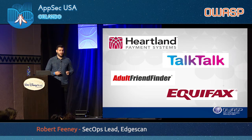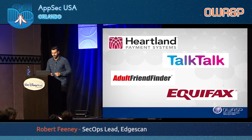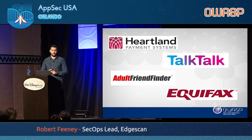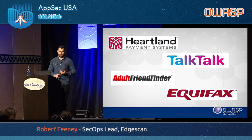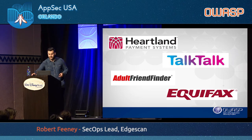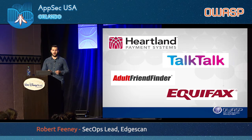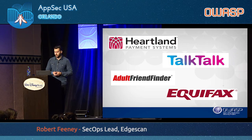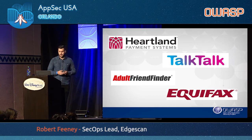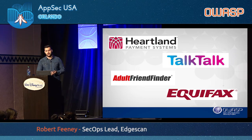Adult Friend Finder was the victim of 340 million accounts being stolen — some including US government and military email addresses — as a result of a local file inclusion vulnerability. More recently, as most of you are aware, Equifax was hacked: 143 million customers, with many US citizens having their social security numbers taken. That was the result of an older vulnerability in the Apache Struts component on their website's framework. The effects of bad web application security can be disastrous to an organization and can kill their business overnight.